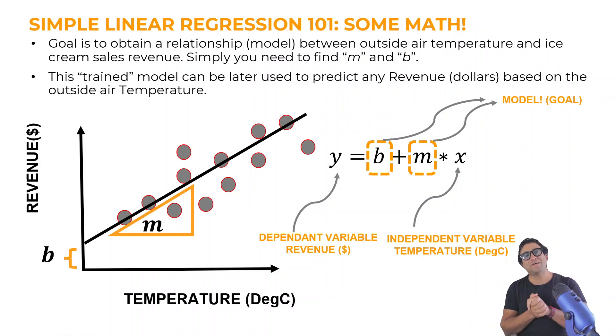So b is going to be my y-intercept and m is going to be the slope of the line. How that line is going to be is going to be like parallel to the x-axis or maybe a little bit at 45-degree angle or is going to be maybe parallel to the y-axis.